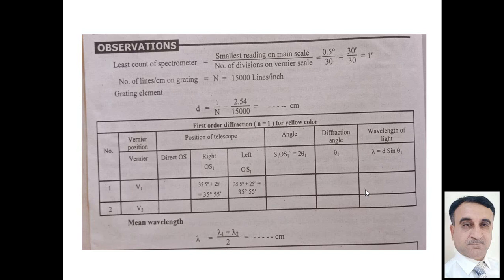The first column is the vernier position. The next column is the position of telescope.